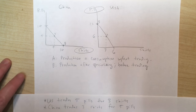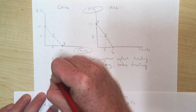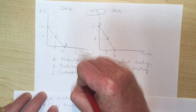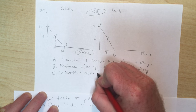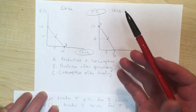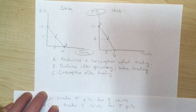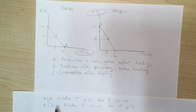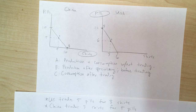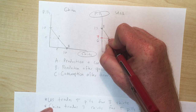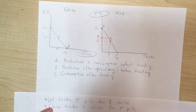We label a point C, which represents consumption after trading — the production already happened, we produced, then traded, and now we see how much is left. The US traded away 5 pills to get 3 shirts, which leaves the US at 7 pills and 3 shirts.